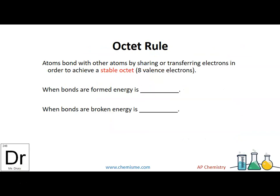This is all relating back to an old octet rule that atoms bond with other atoms to either share or transfer electrons to receive or attain a stable octet of 8 valence. So when bonds are formed, energy is released, and when bonds are broken, energy is absorbed. This is something we talked about quite a bit last year.